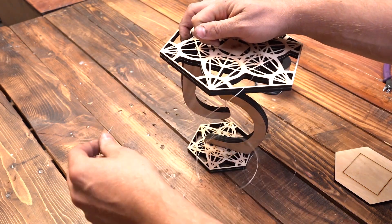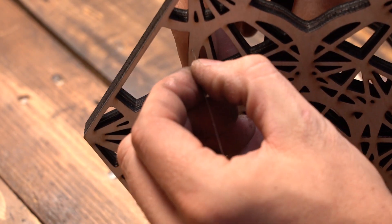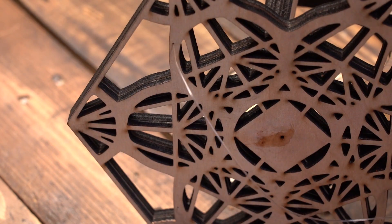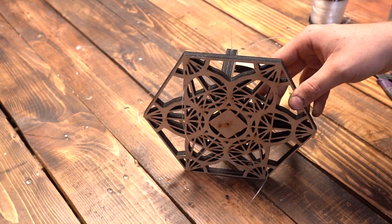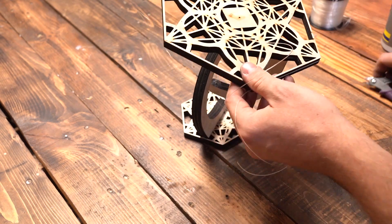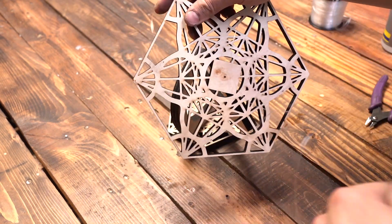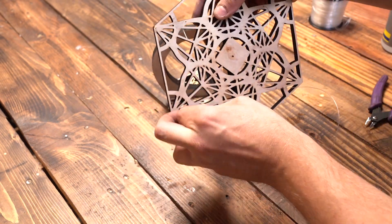Now we're going to take our fishing line and cut two big pieces and run it through the tiny holes. Criss-cross the design, run it through.